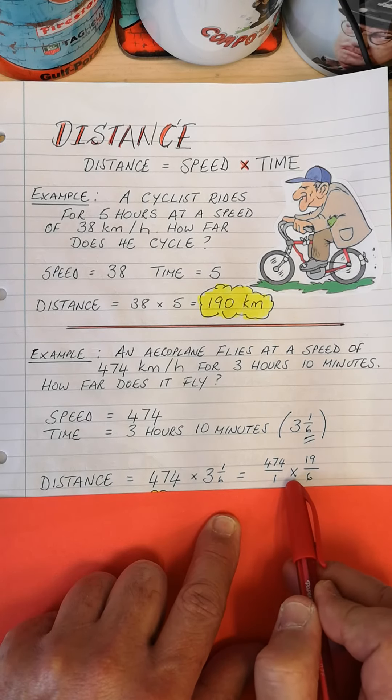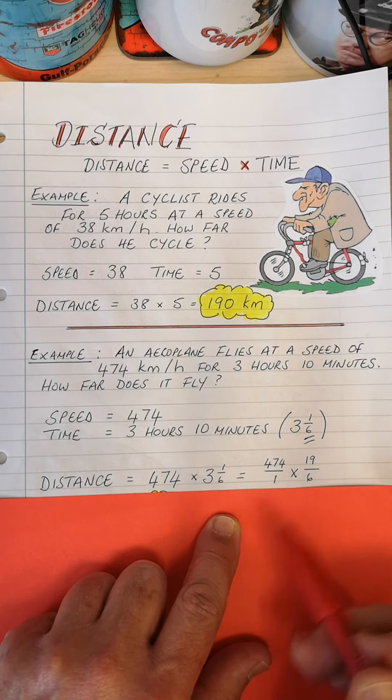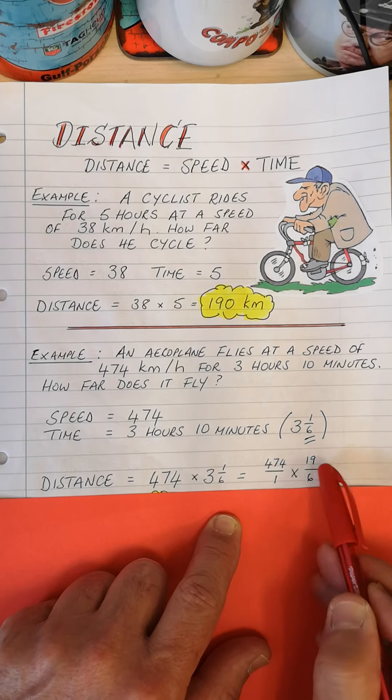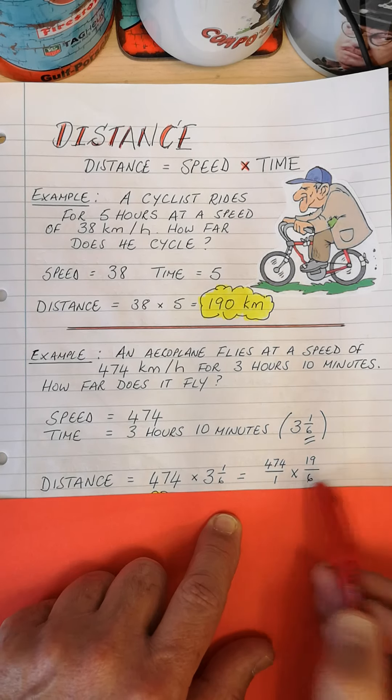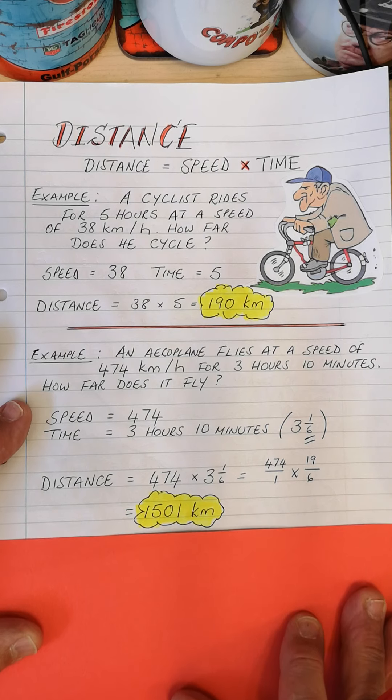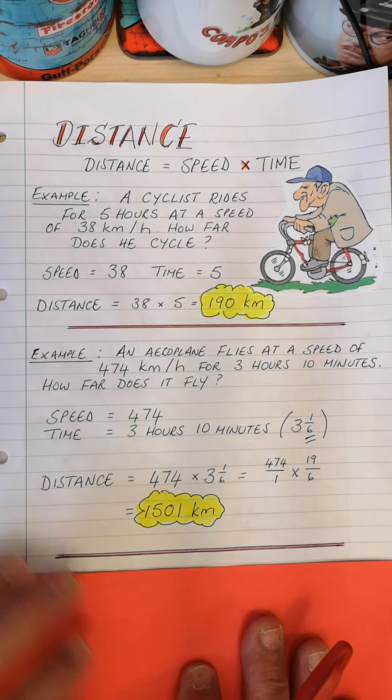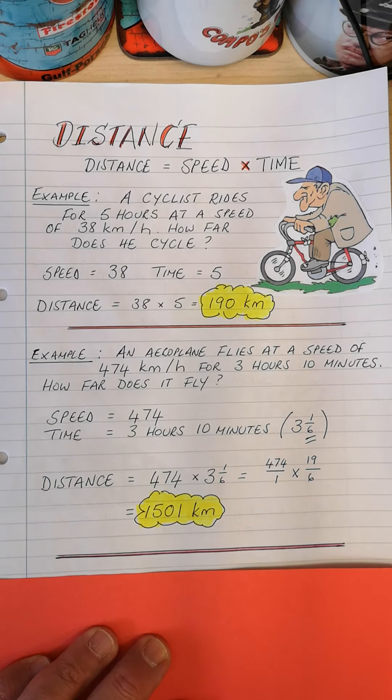So how do we set the sum out? Again, distance will be equal to the speed times three and one sixth. We need to make this into a top heavy fraction. So it is 474 over one times 19 over six. No need to invert this one because it's not division, it's multiplication. We can do some cross dividing or you take your calculator because these sums are normally in your calculator papers and you multiply 474 by 19 and the answer you get, you divide by six. And the answer is 1501 kilometers.